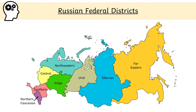Russia is split into eight regions called federal districts, shown on the map. The Central district is where the capital city Moscow is located. The Volga district covers much of the drainage basin of the River Volga. And Chechnya, which we discussed last lesson, is found in the Northern Caucasian district.